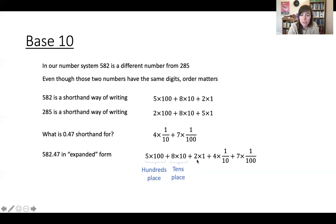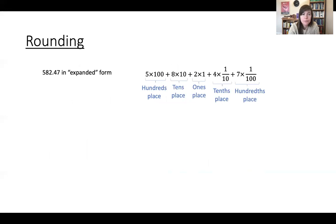8 is in the tens place, 2 is in the ones place, 4 is in the tenths place, and 7 is in the hundredths place. Okay, so you've got something like this number written in expanded form.